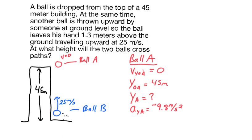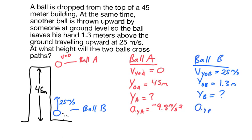Now for ball B, I know the initial velocity in the Y direction is 25 meters per second and that's upwards, make that a positive. I know the initial Y position for B is 1.3 meters off the ground. I'm looking for the final Y position. It'll be the same as it is for ball A. And I know the acceleration in the Y for ball B is going to be the same, negative 9.8 meters per second squared.